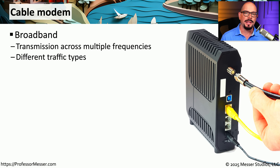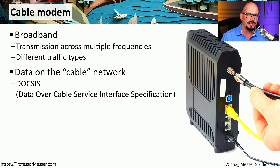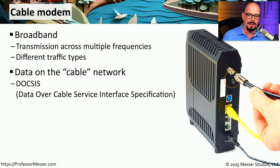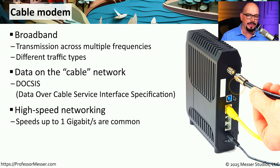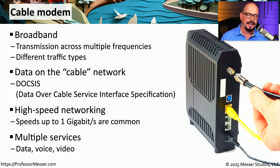If your internet connection comes from a traditional cable television provider, then you're probably getting your data connection from a cable modem. This uses a broadband connection, usually provided over a coax link, providing an ethernet connection on the other side. You'll sometimes see these cable modem devices referred to as a DOCSIS device — that stands for Data Over Cable Service Interface Specification. We commonly see one gig communication and higher on these cable modem connections, and this is a common connection for people who already have cable television in their home. Since you can get such high throughputs, it's also very common to see these in a corporate environment even if you aren't using the television or voice communication.